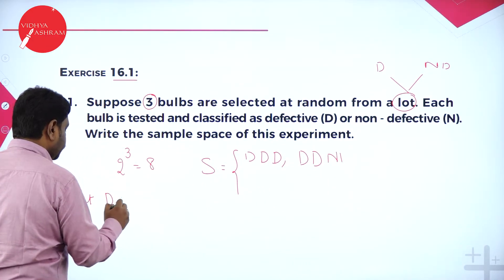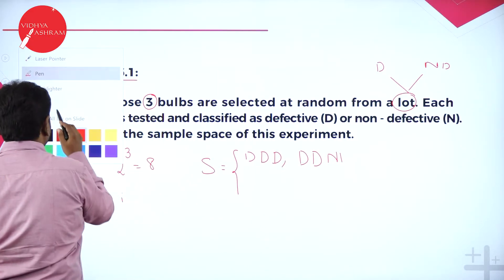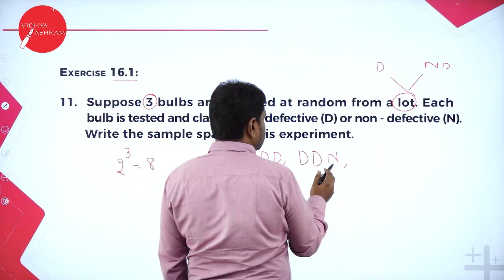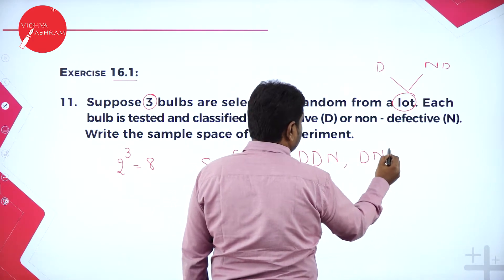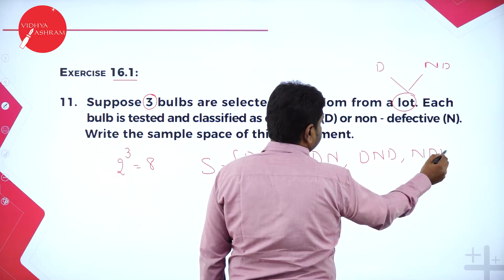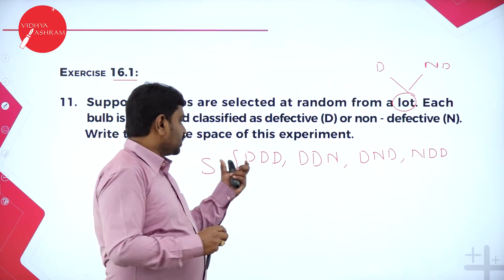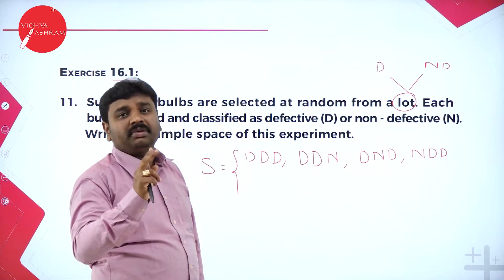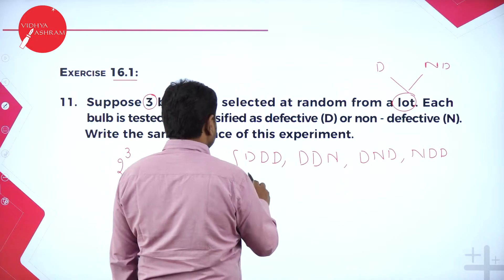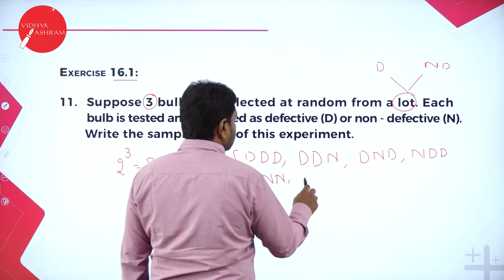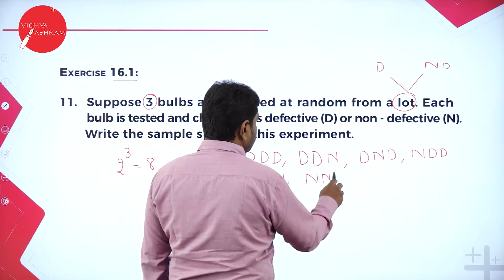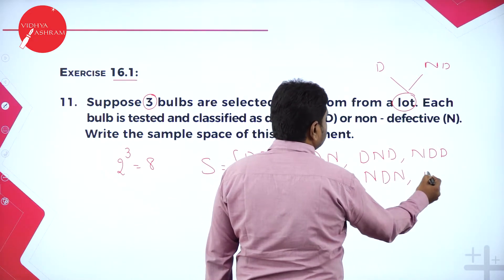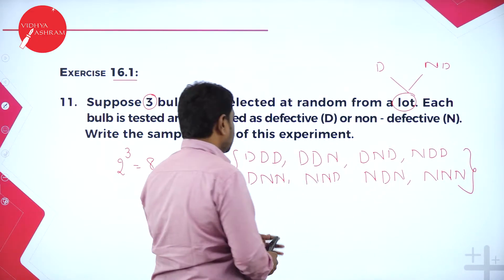So D, D, N — or any one may be defective: the last one non-defective, or the second one non-defective, or the first one non-defective. Or two may be non-defective and only one defective: D, N, N or N, N, D. Or first two non-defective, middle one defective. Or all three may be non-defective. So all eight possible outcomes are written.